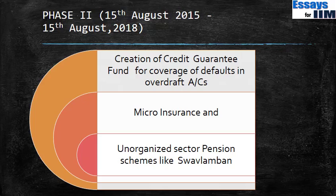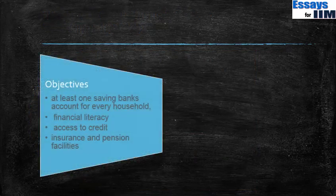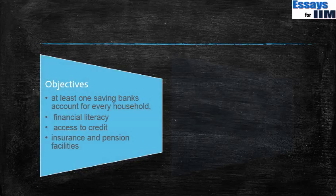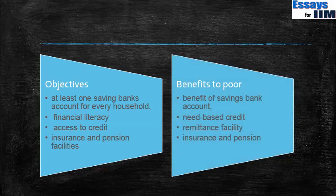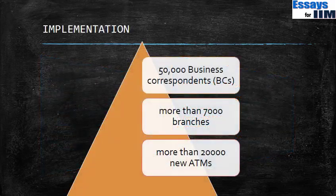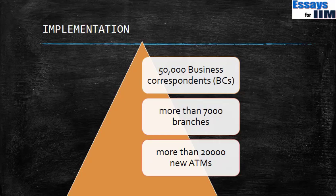Jan Dhan Yojana is trying to bring all financial services sector schemes into one bouquet and provide people with all sorts of facilities under this one scheme. To summarize, the objective is to have at least one savings bank account for every household, providing financial literacy, access to credit, insurance, and pension facilities. For implementation, the government is providing 50,000 additional business correspondents who can open and help operate bank accounts, more than 7,000 new bank branches, and more than 20,000 new ATMs.